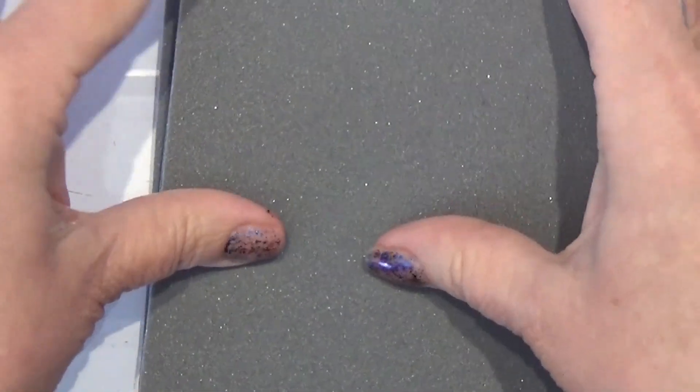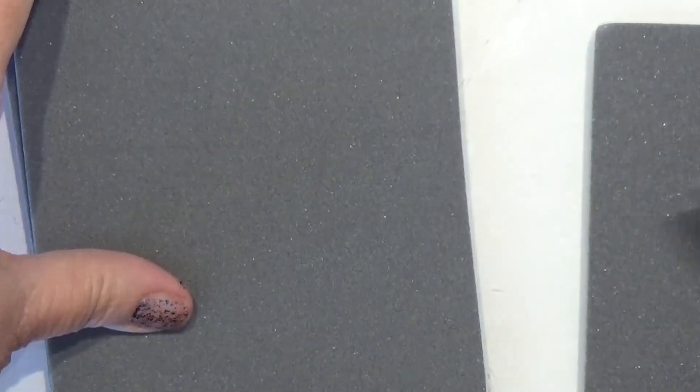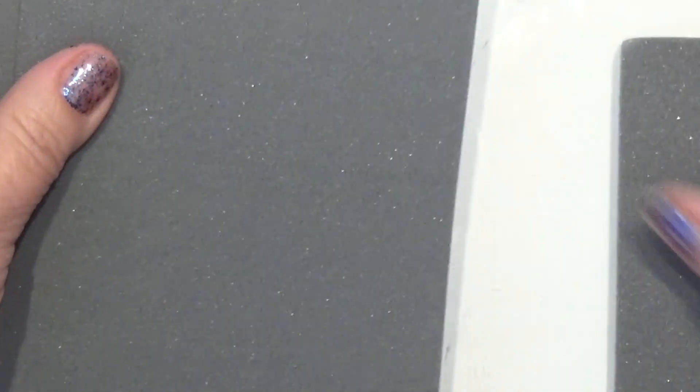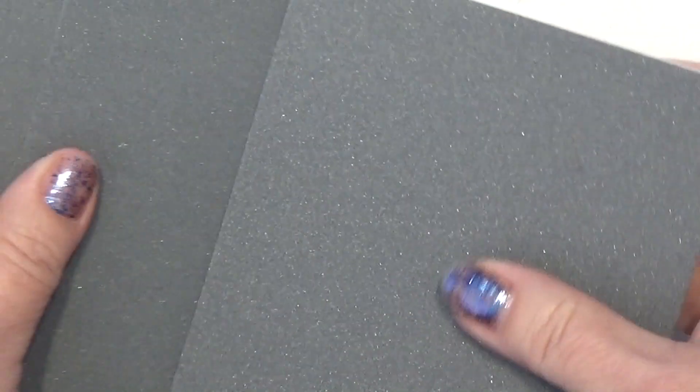There we go. So there is a sand sponge with a big grid, a medium grid, and a finer grid: 240, 280, and 360.